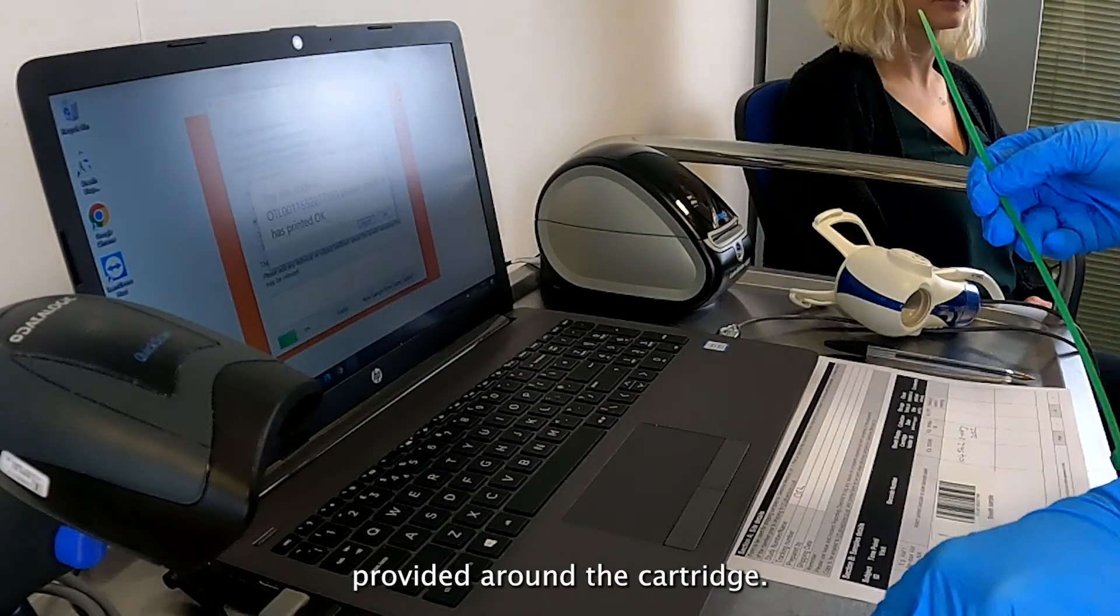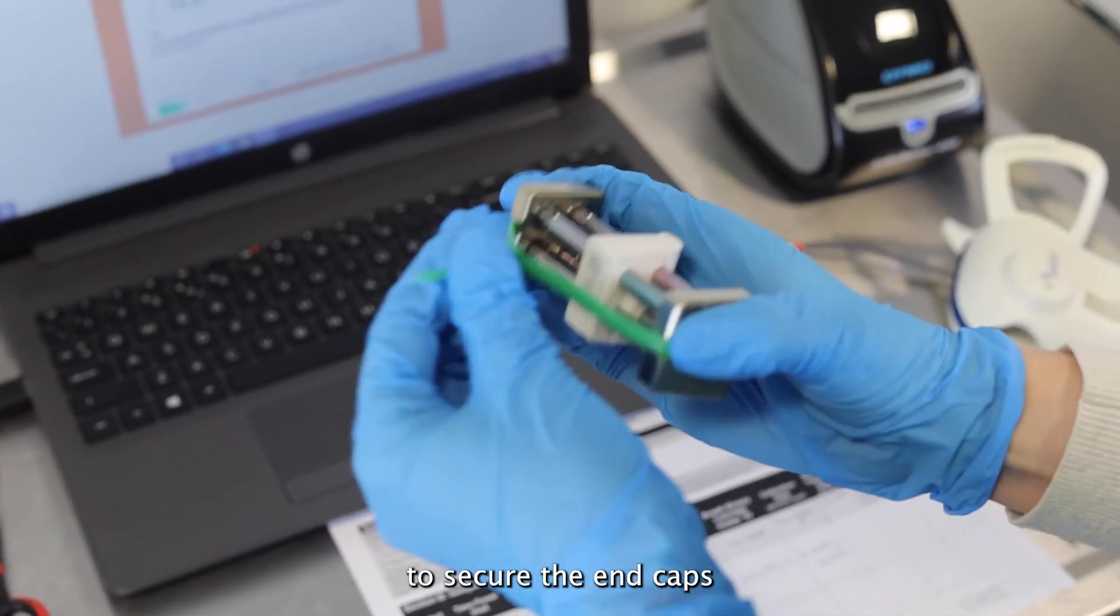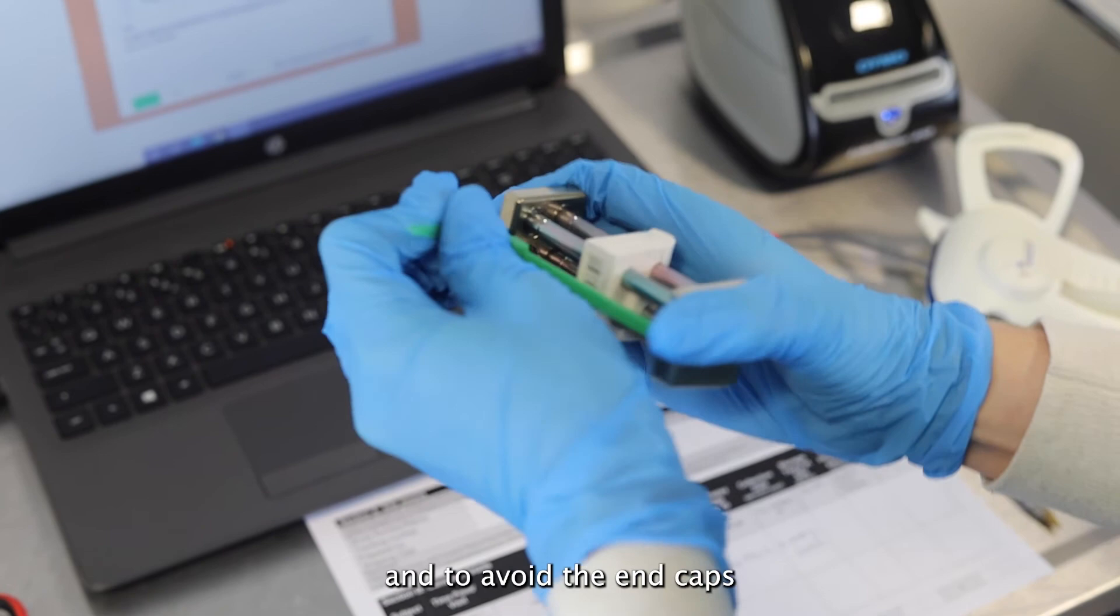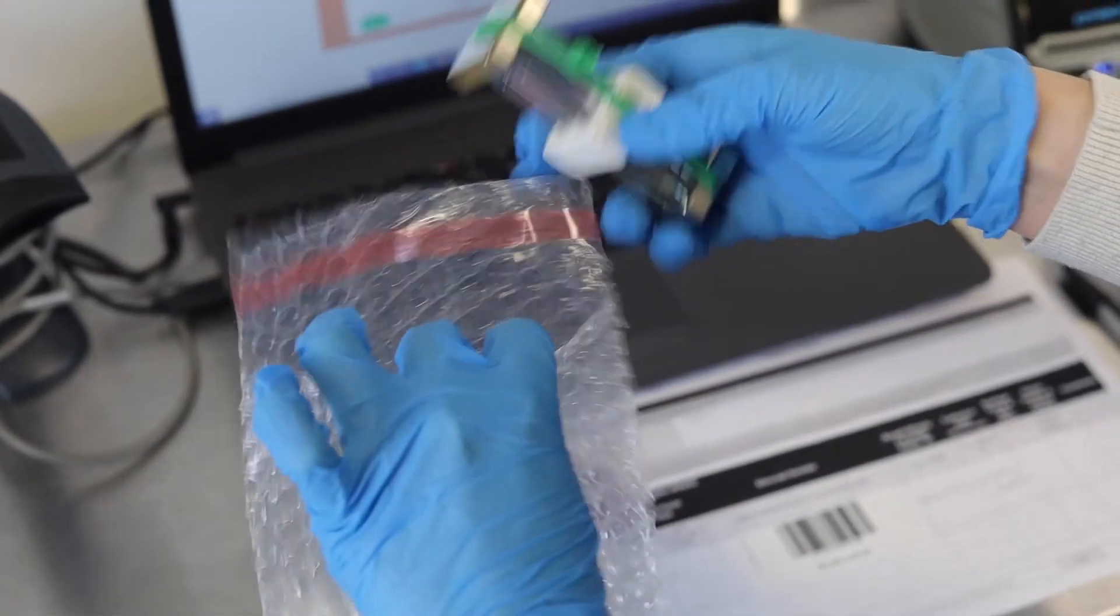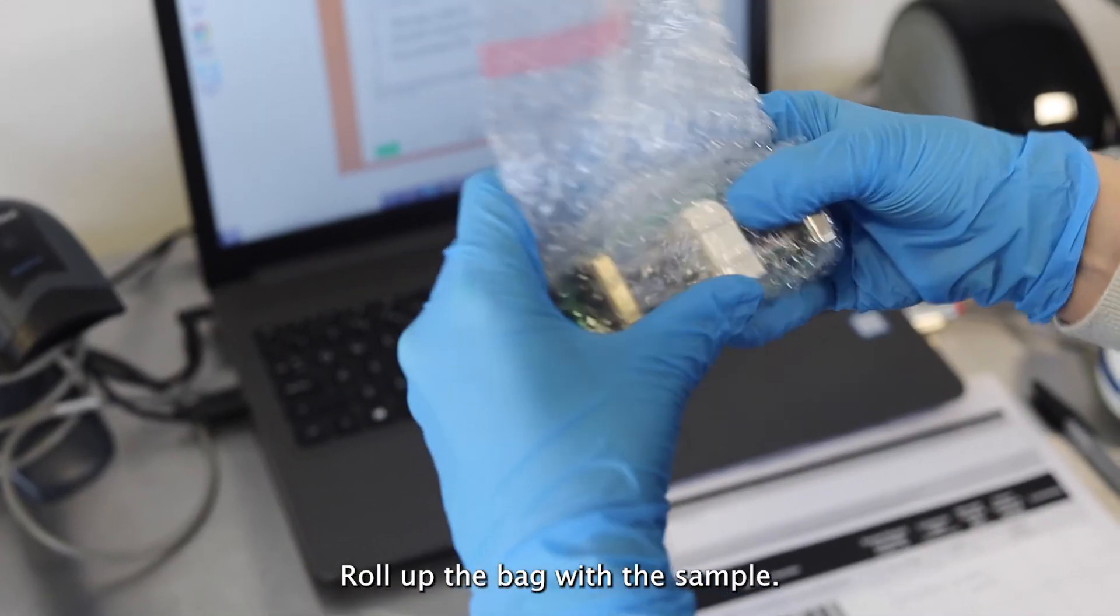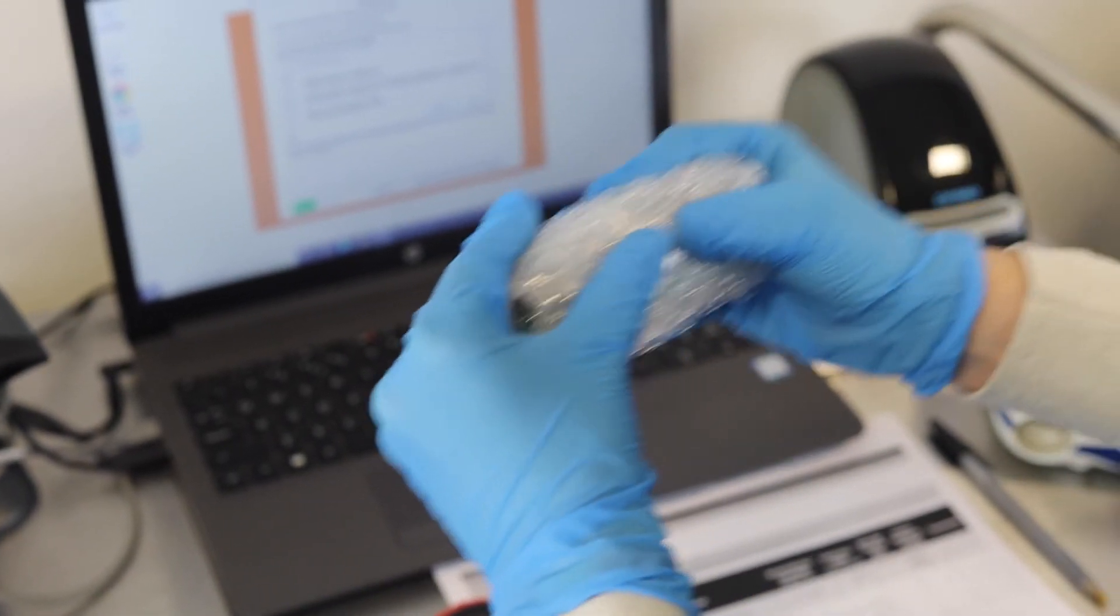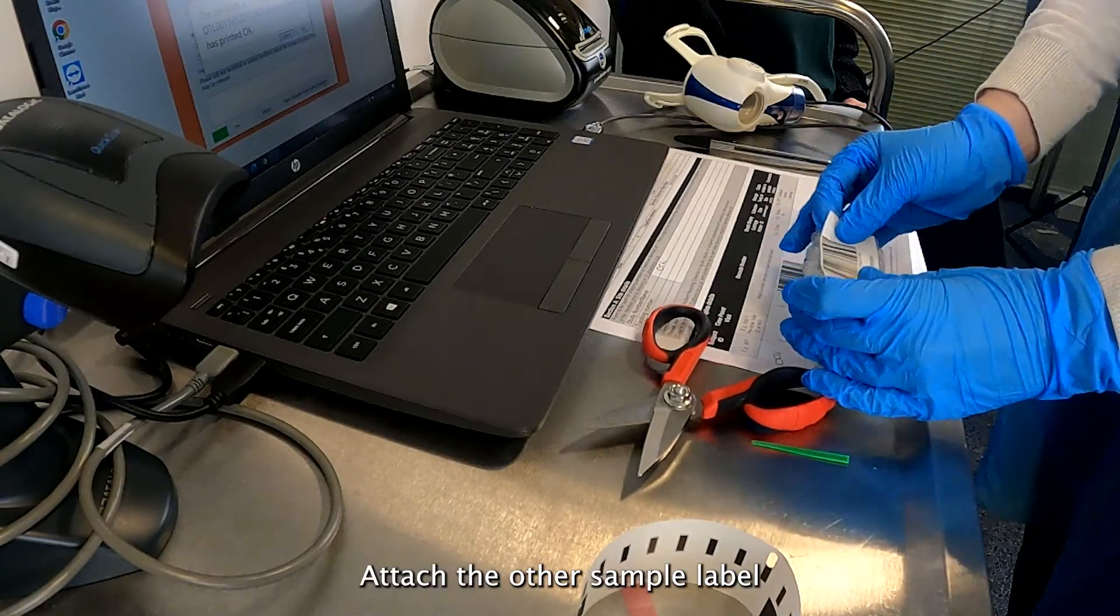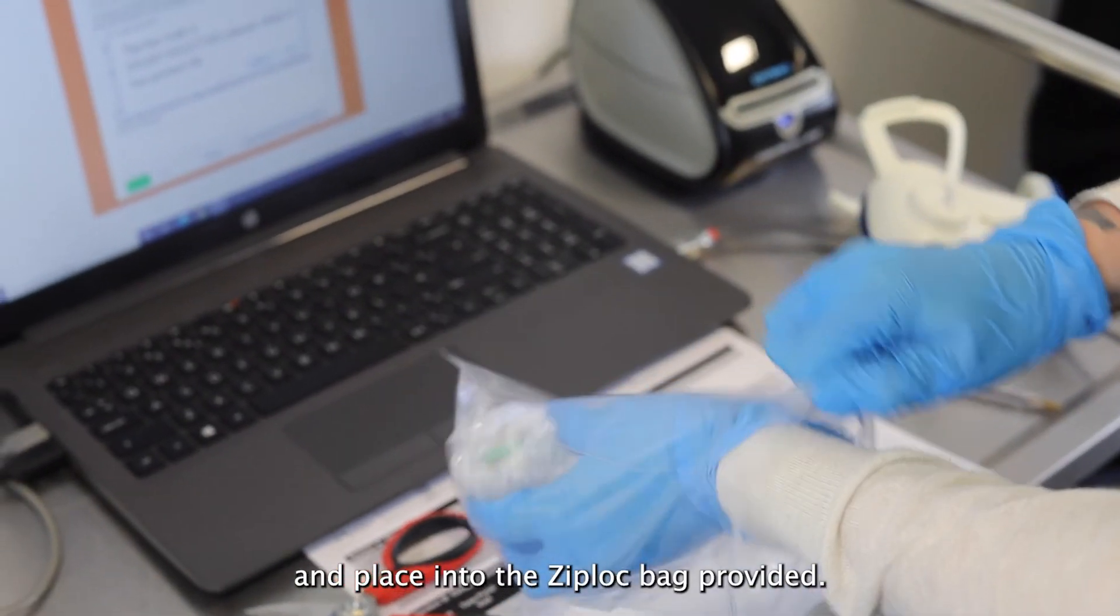Fit the cable tie provided around the cartridge, pull and tighten the cable tie to secure the end caps and to avoid the end caps being removed by accident or during transportation. Place the cartridge in the bubble wrap bag provided. Roll up the bag with the sample, remove the adhesive strip and secure. Attach the other sample label to the bubble wrap bag and place into the ziplock bag provided.